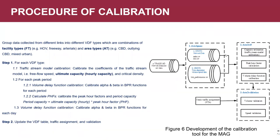The overall calibration process starts from time-dependent volume and speed data with 15-minute time steps. We first calibrate the ultimate capacity using traffic flow models, then calibrate the peak hour factor based on our definition, convert hourly capacity to period capacity using the peak hour factor, and calibrate the demand-over-capacity ratio. We then use curve fitting to calibrate the BPR function parameters alpha and beta for traffic assignment. The system architecture covers data flow through calibration of the traffic stream model, capacity, peak hour factor, and VDF functions, followed by validation of assignment volume and assignment speed. Calibration is done both period-by-period and for the whole day.